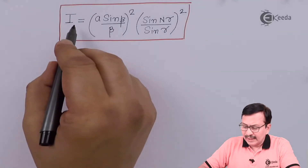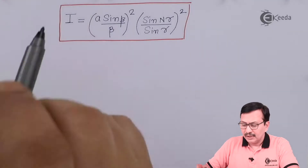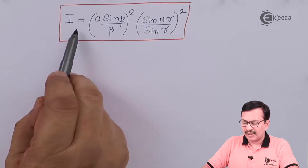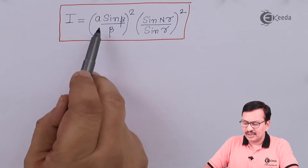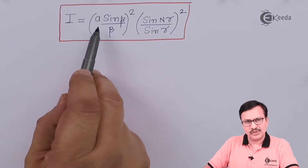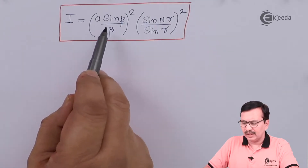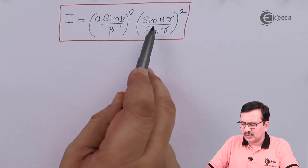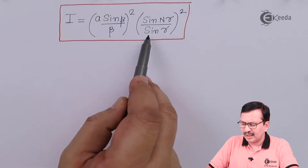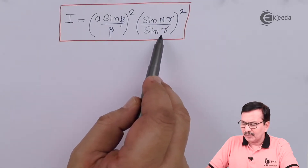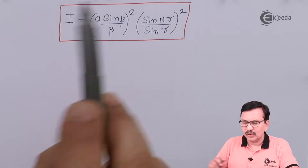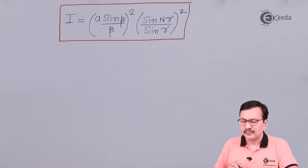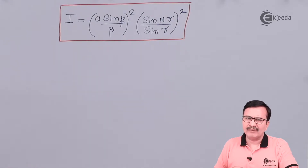The intensity due to an n-slit diffraction pattern is given by I is equal to A into sin(β)/β the whole square, into sin(nγ)/sin(γ) the whole square, wherein all the symbols have their respective values.